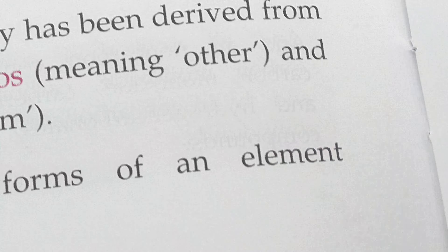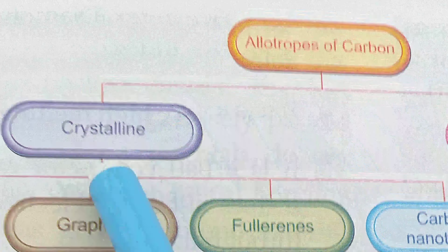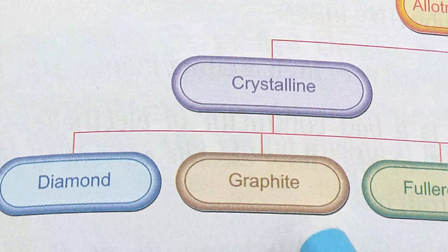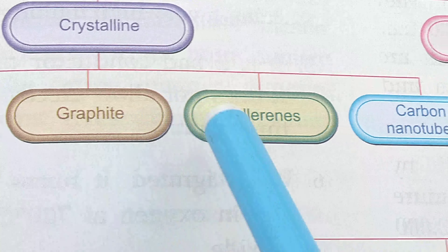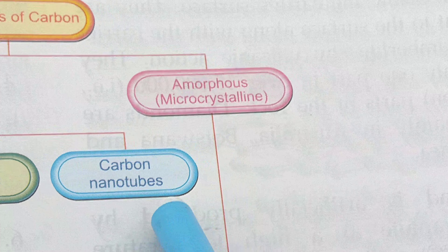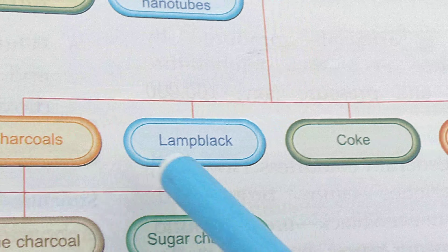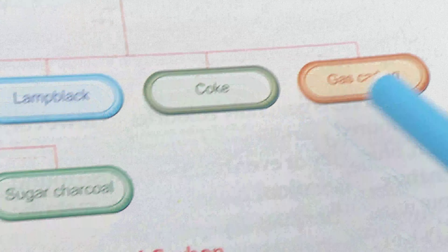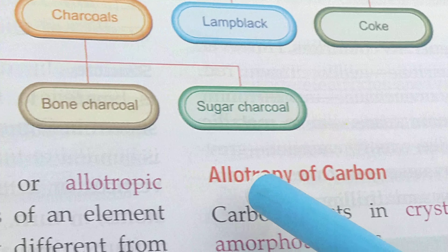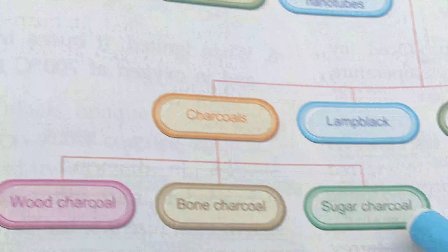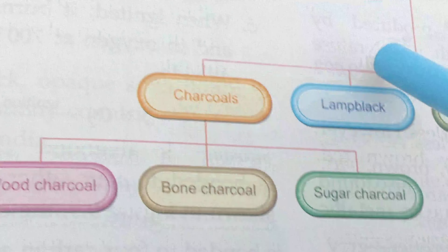The allotropes of carbon are available in two states: crystalline and amorphous. Crystalline allotropes are four types: diamond, graphite, fullerenes, and carbon nanotubes. Amorphous allotropes are also four types: charcoals, lamp black, coke, and gas carbon. Charcoal is further divided into three types: wood charcoal, bone charcoal, and sugar charcoal.